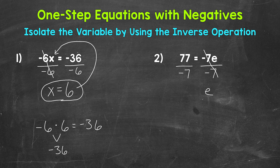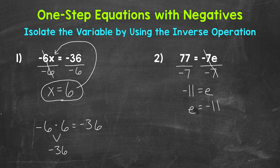e equals — and on the left side of the equation, we have 77 divided by negative 7. A positive divided by a negative is going to equal a negative, so we get negative 11. e equals negative 11. We can rewrite this with the variable coming first: e equals negative 11.